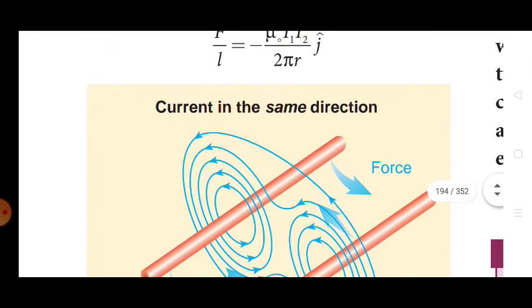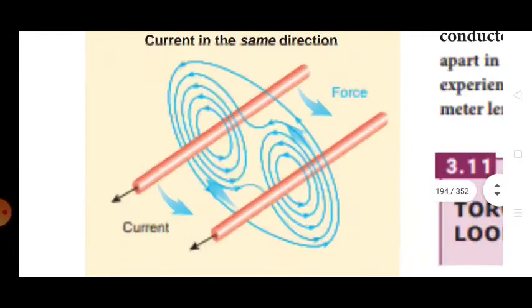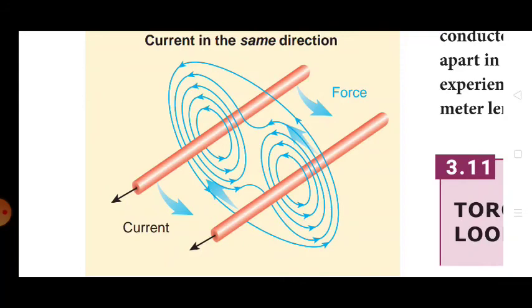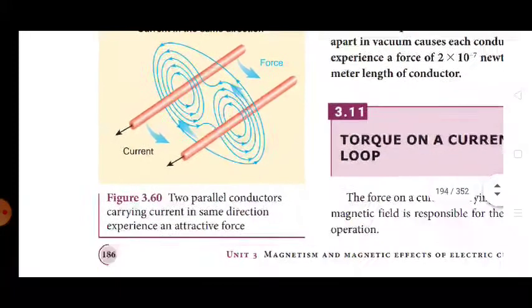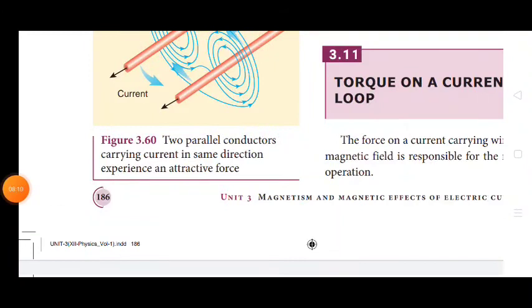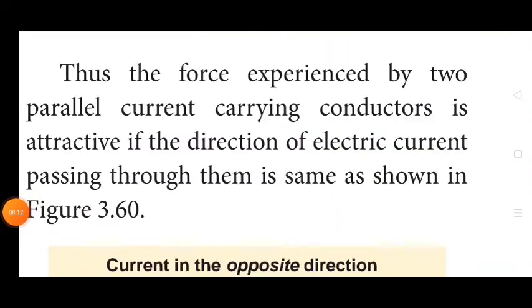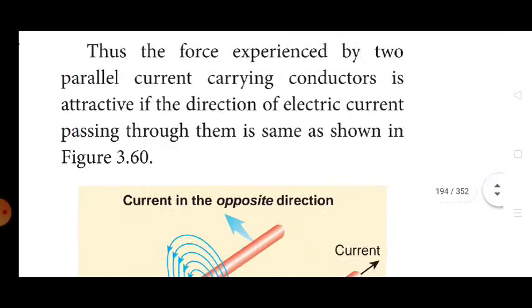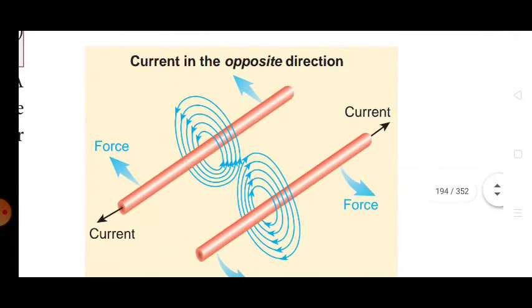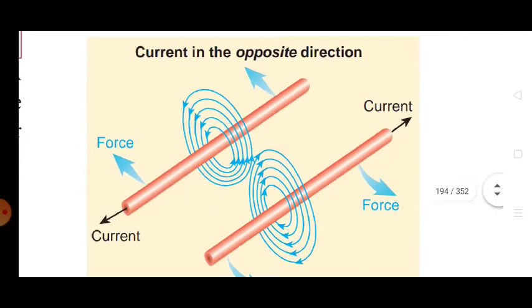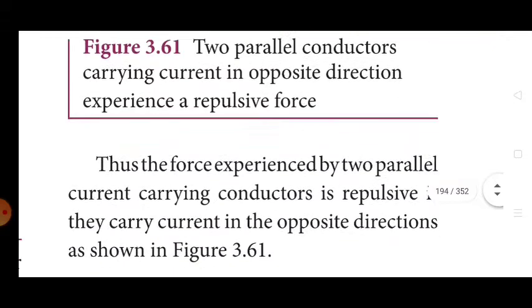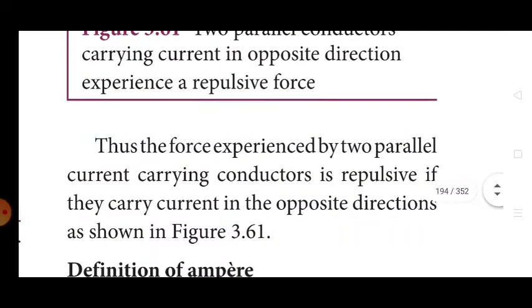When current flows in the same direction, the magnetic forces attract the conductors. Thus, the force experienced by two parallel current carrying conductors is attractive if the direction of electric current passing through them is the same. When currents flow in opposite directions, the force is repulsive. The force experienced by two parallel current carrying conductors is repulsive if they carry current in opposite directions.